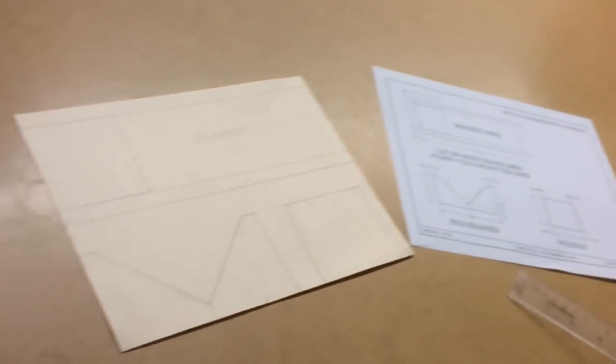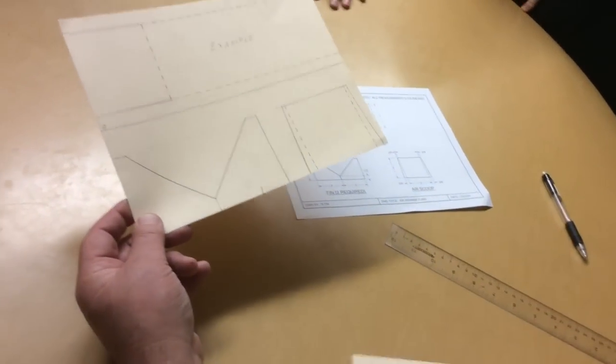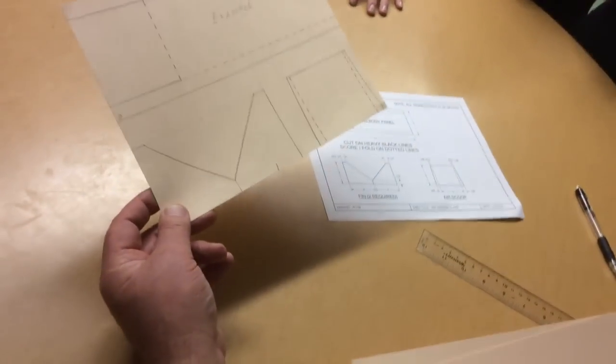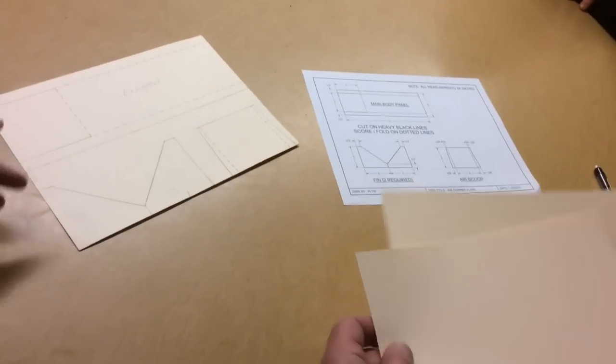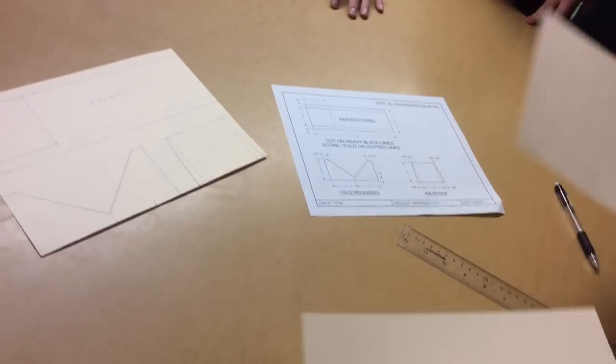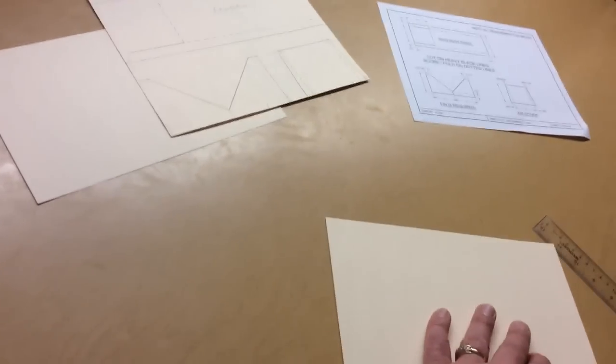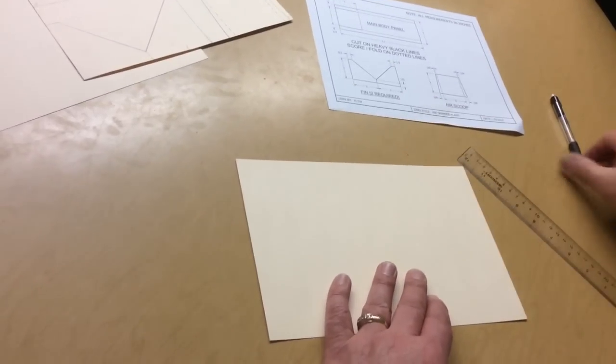You're all going to be given two sheets of this paper. Here's an example of what one looks like if it's laid out correctly on one sheet, but the papers I have aren't quite big enough for all of your parts on one, so you'll get two sheets. One for the main body panel and then one for your fins and air scoop. So let's go ahead and lay out the main body panel first according to those dimensions that you see on the paper.